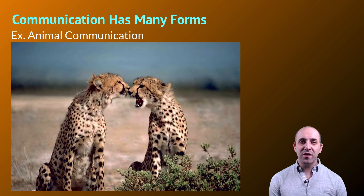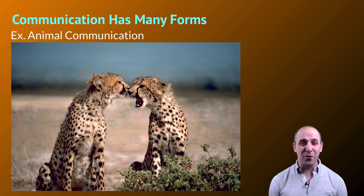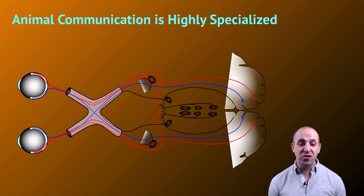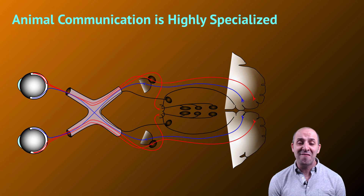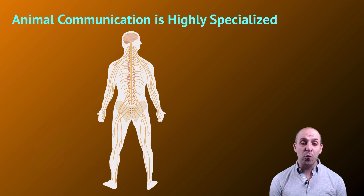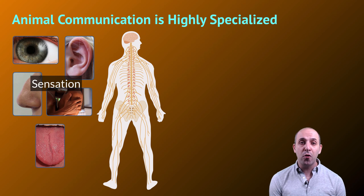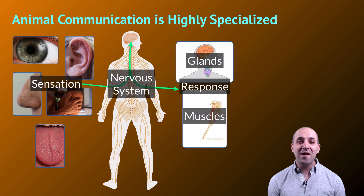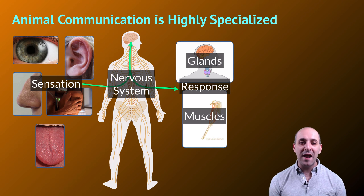Moving beyond the level of the individual organism, we can see other forms of communication, particularly in animals. Animal lineages have highly developed communication systems. These two cheetahs are clearly communicating with each other — it's obvious they are interacting. Animal communication is highly specialized and is one of the main things that separates animals from other lineages of life, due to the diversity of their communication strategies and how they get information from the environment. Animals have highly developed sensory systems — things like eyes — in constant communication with processing organs like the brain, and extensive nervous systems that sense information from other organisms or the environment, integrating and coordinating responses through glands and muscles.